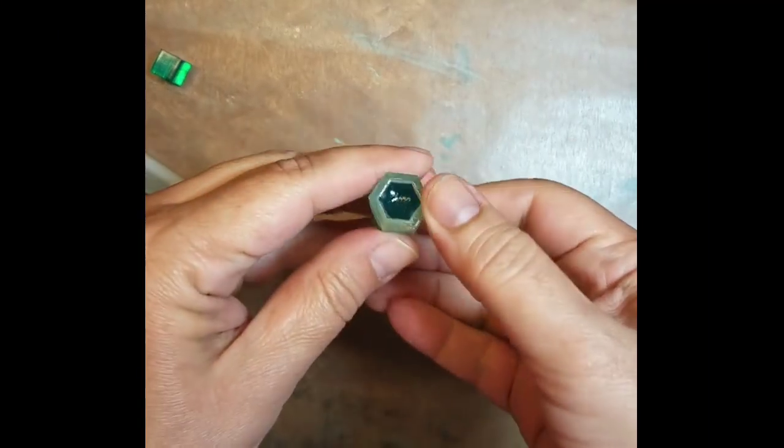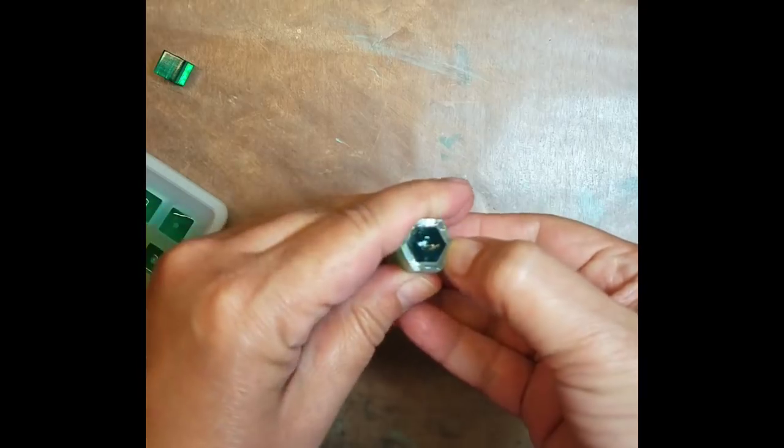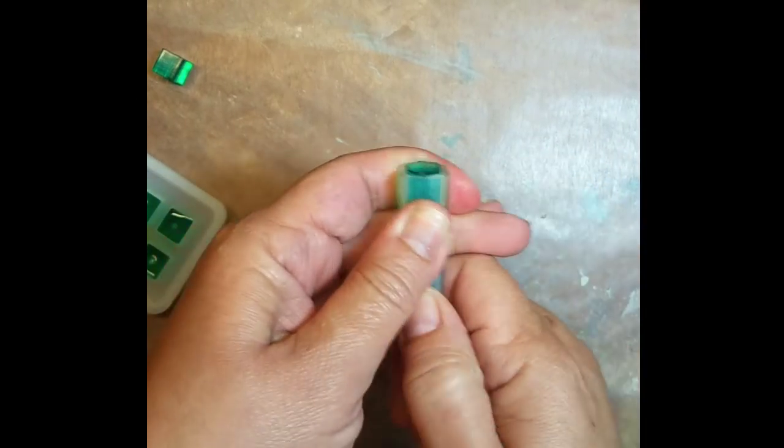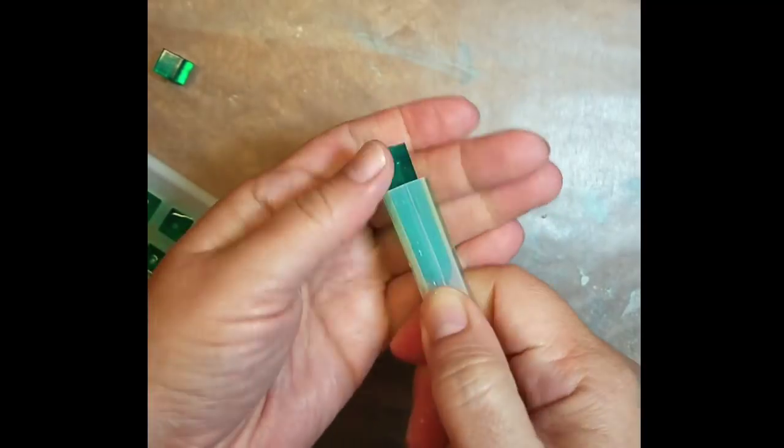Once your resin has cured, add a little drop of dish soap and water to the top of your crystal mold. This really helps in removing the crystal.